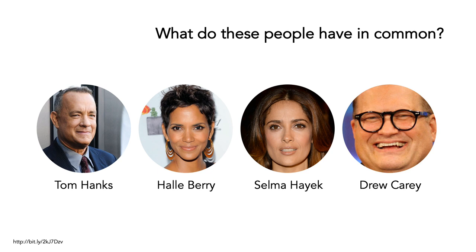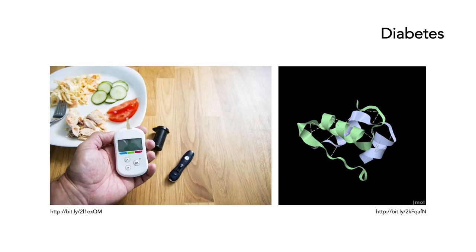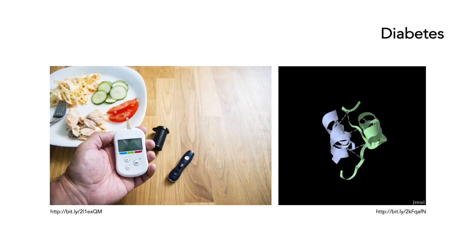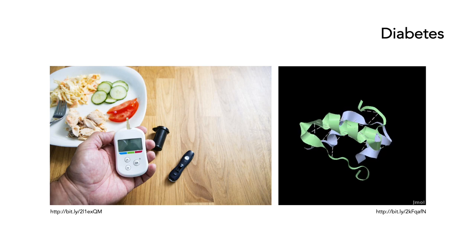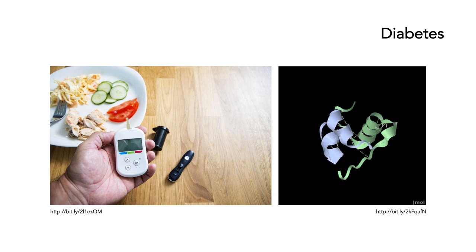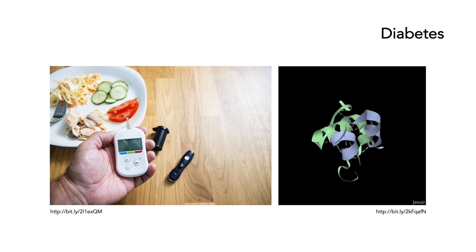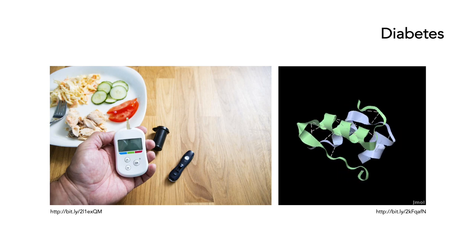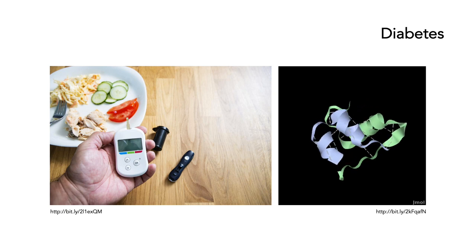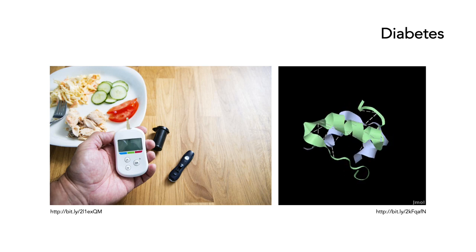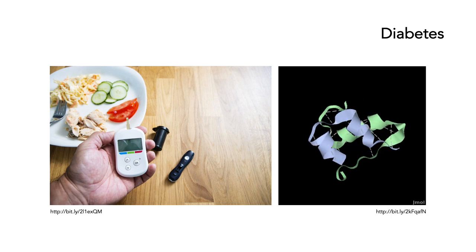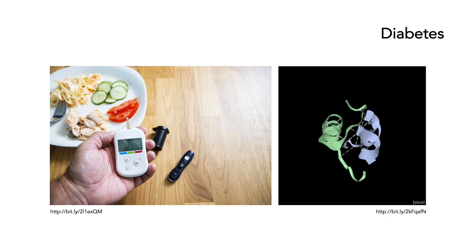Let's come back to our original discussion. Tom Hanks, Halle Berry, Salma Hayek, Drew Carey — what do these people have in common? The answer is they all have diabetes. Diabetes is treated with a particular protein called insulin. The demand for insulin in a medical setting is absolutely huge — there are large numbers of people who have diabetes, and you probably know some in your own families or among friends. Because of the demand, almost all insulin used around the world today is made using recombinant technologies — essentially using all of the techniques discussed in this presentation.